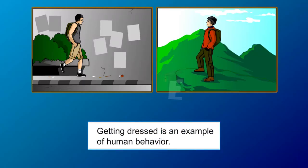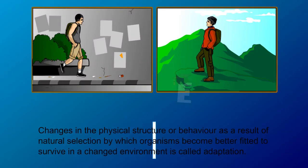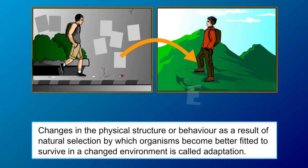The way you dress up is an example of human behavior. The alteration in structures, such as the dog's fur, or behavior, such as human dressing options resulting from natural selection so organisms become better fitted to survive in the change of environment is called adaptation.